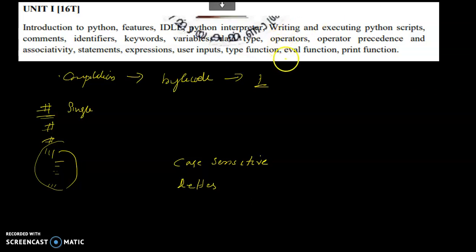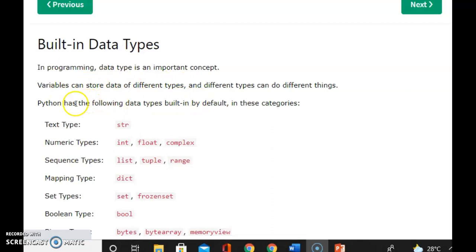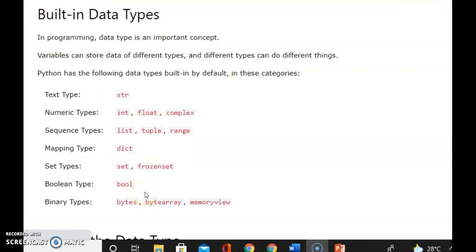Next, use data types. There are different data types in Python. Python has various data types — you can have integer, float, and string types. There is no Array type in Python. Then there are sequence data types. We will explain the sequence data types in Python and divide the data types into different categories.